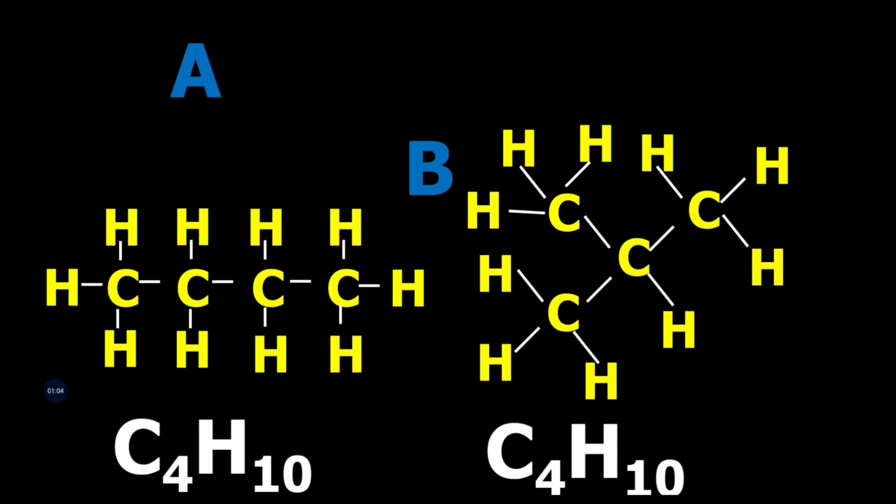In molecule A, the parent chain has 4 carbons. In molecule B, the parent chain has 3 carbons.